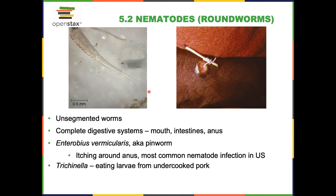Trichinella — many of us have heard of it — comes from eating undercooked pork. One of the reasons pork is generally frozen prior to selling in stores is because the freezing process can kill Trichinella. Typically nowadays you really only get Trichinella from pork you catch yourself — i.e., wild boars that you hunt.